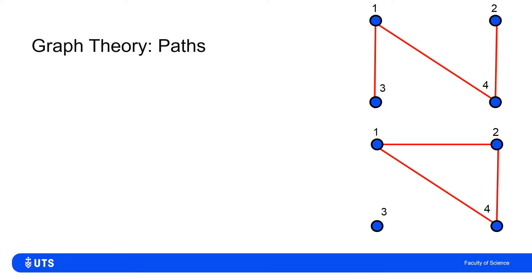In the previous video we introduced the very basic definitions of graph theory, defining graphs in terms of a set of nodes and a set of edges, such that the edges were subsets of either size one or size two of the set of nodes. An edge with one node associated with it would be a node looping to itself, and an edge with two nodes associated with it would be connecting those two nodes.